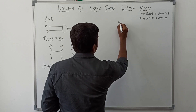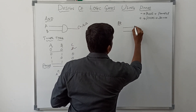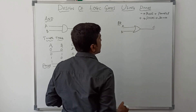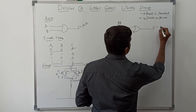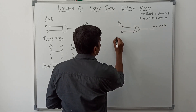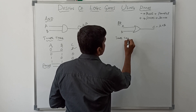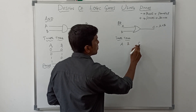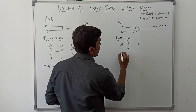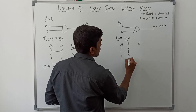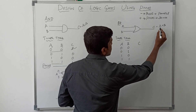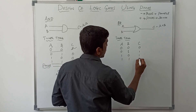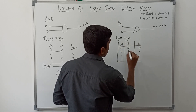Next I am going to design the OR gate. First I draw the symbol of OR gate. Inputs are A and B, and output is C. The boolean expression for this OR gate is A plus B. The truth table has two input variables A, B and one output C. The four combinations give outputs: 0+0=0, 0+1=1, 1+0=1, 1+1=1. This is the truth table of OR gate.